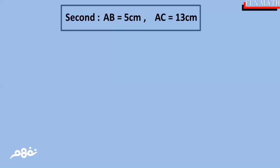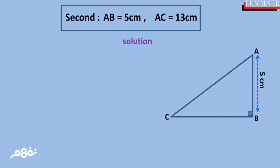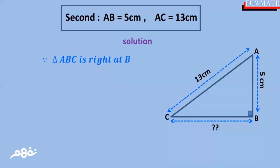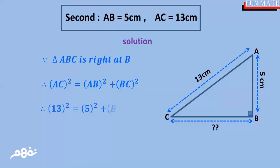Second case — when AB equals 5 centimeters and AC equals 13 centimeters. The solution: since triangle ABC is right-angled at B, by the Pythagorean theorem, AC squared equals AB squared plus BC squared. So 13 squared equals 5 squared plus BC squared.